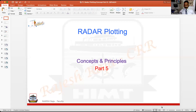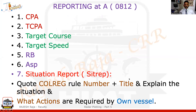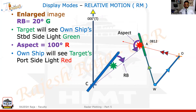Let us continue on the same radar plotting principle. If you remember, we were trying to solve a problem for radar plotting, the basic. I'll call this part 5. Just as a recap, we had done the first 7 points — that is what we finished last time because we found out Rb and aspect. So we could come to a conclusion on the colregs also. You can see Rb was 20 degrees green and the aspect was 100 degrees R.